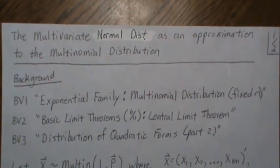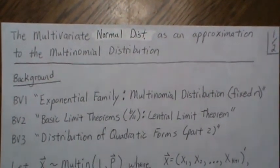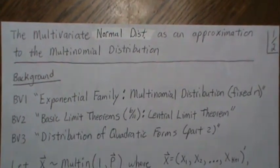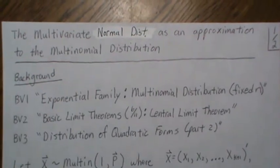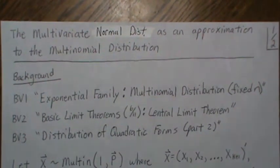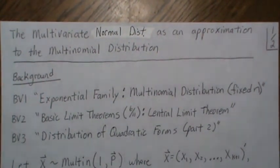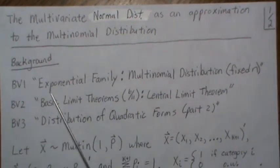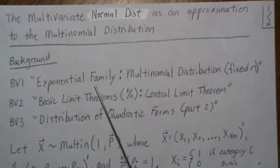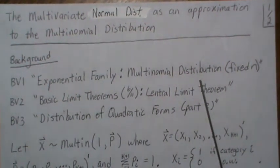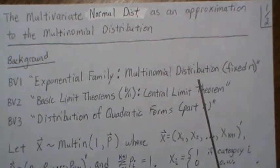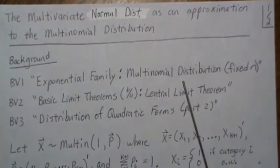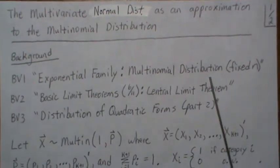Hello, in this video we're going to look at the multivariate normal distribution as an approximation to the multinomial distribution. This is at the request of a YouTuber Nason Mandigo, if I'm pronouncing the name correctly. For it we'll need three background videos. BV1 is the exponential family multinomial distribution, and there we derive in a unique way the mean, the variance, and the covariances for this multinomial distribution that we'll use in this video.